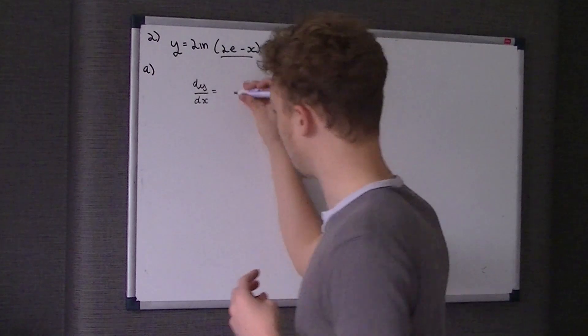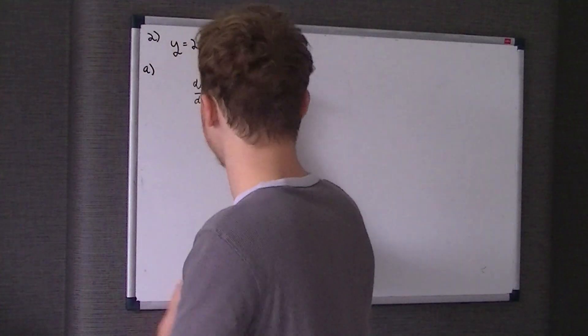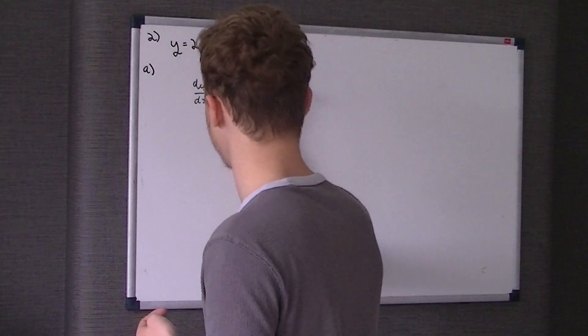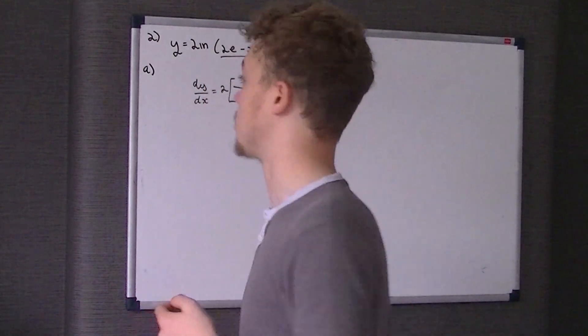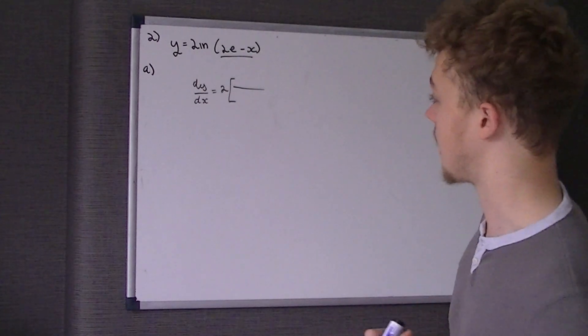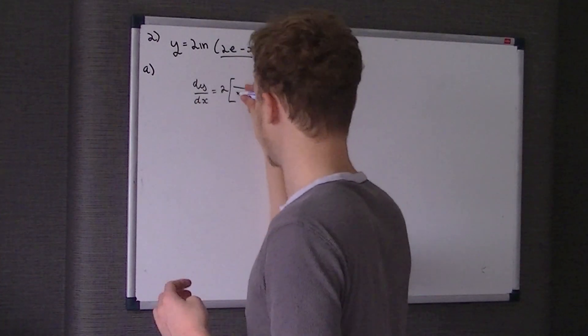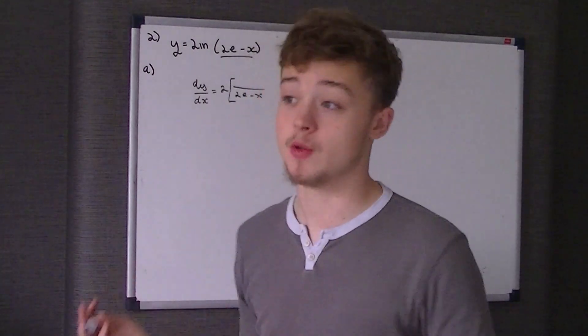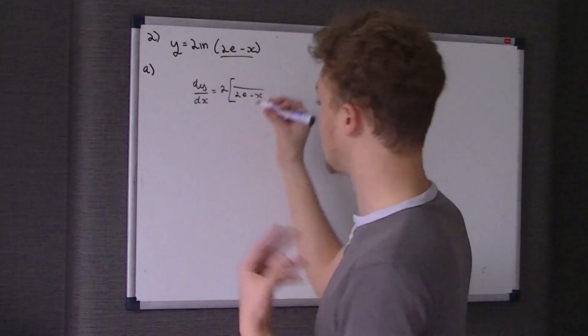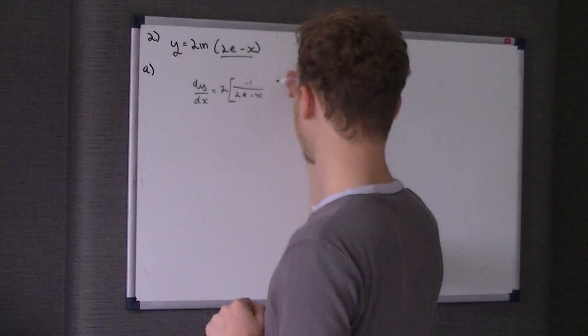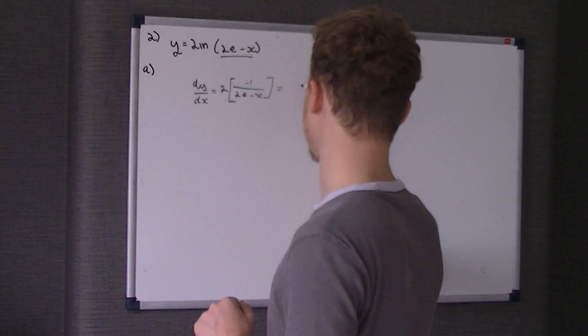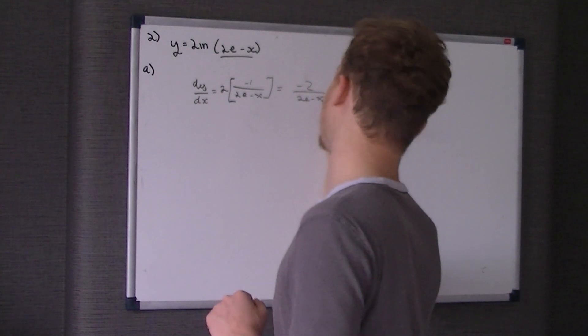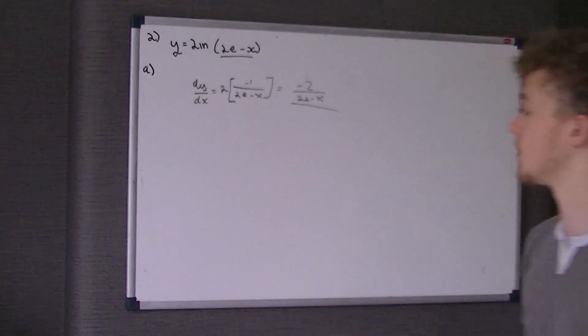So the differential of 2e take x on the top of the fraction and 2e take x on the bottom. However, we're differentiating 2 ln 2e take x, so all we do is times the differential by 2. Therefore, it's negative 2 over 2e take x. That's your answer for your differential.